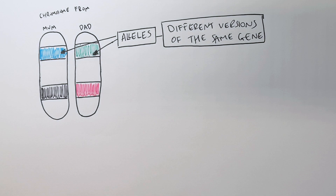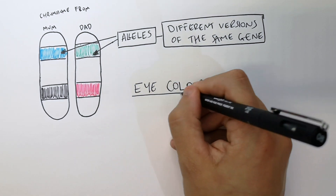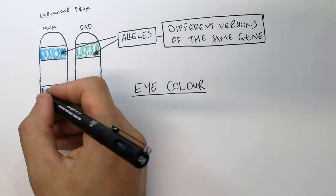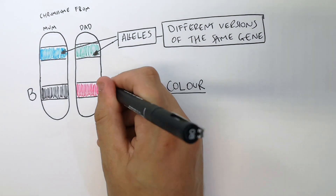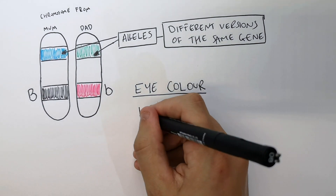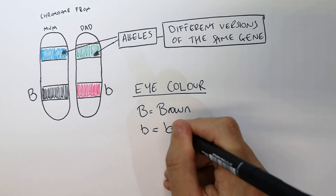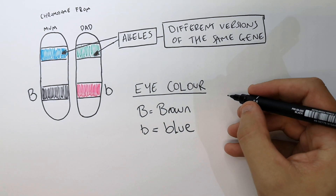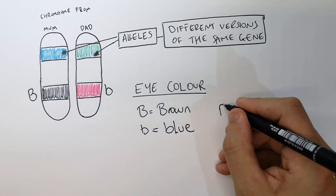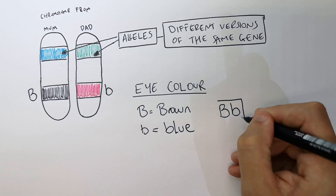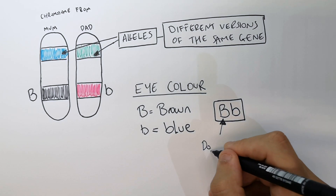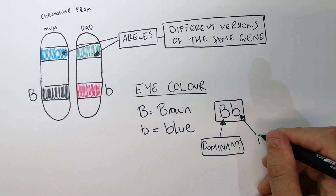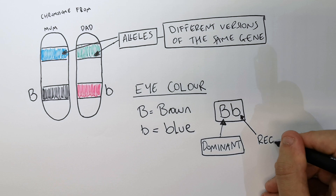We're going to be looking at the inheritance of eye colour. Mum has the gene for brown eyes and dad has the gene for blue eyes. Big B is brown, little b is blue. The child is going to have big B, little b alleles, whereby the big B is dominant and the little b is what we call recessive.